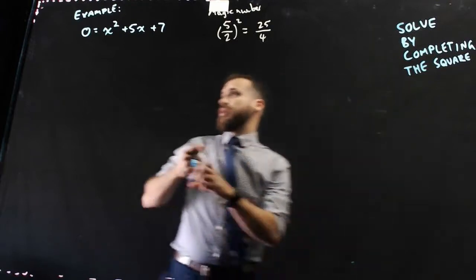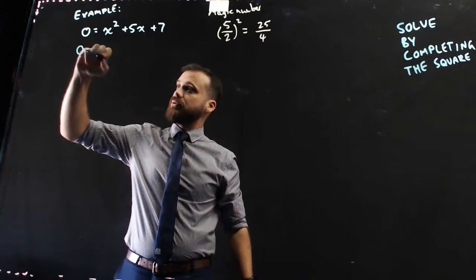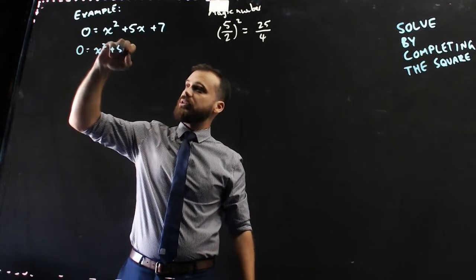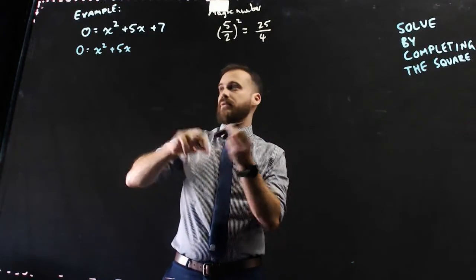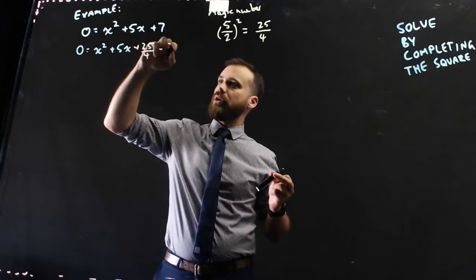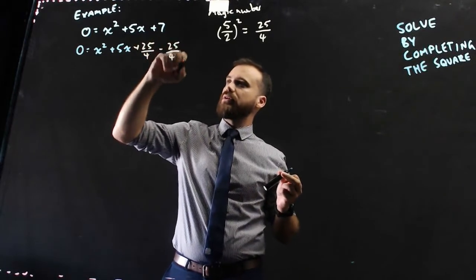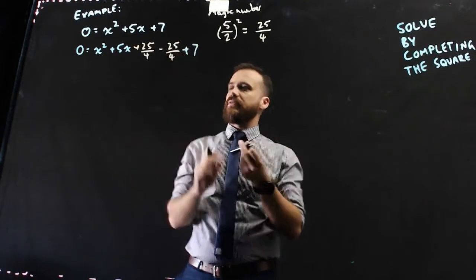I can add it and subtract it from here. So, 0 equals x squared plus 5x, here's a different colour pen, plus 25 over 4 minus 25 over 4 plus 7.